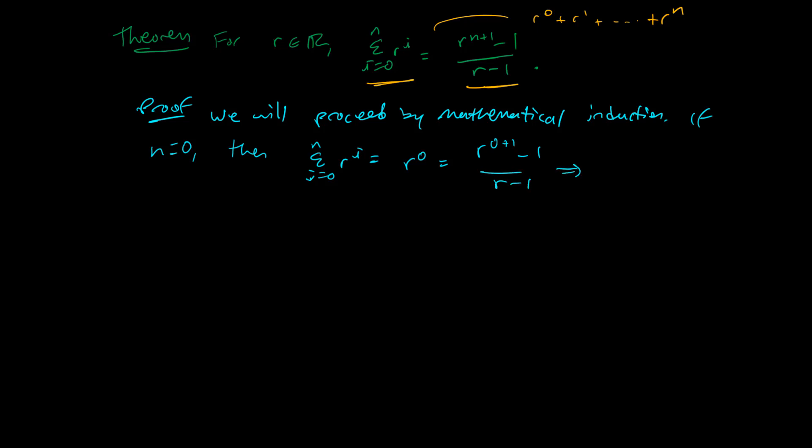And hopefully that is the same thing as r to the 0 plus 1 minus 1 over r minus 1. And notice that r to the 0 is 1. On the right-hand side of the equation, we get r minus 1 over r minus 1, which is 1 as well. The theorem holds for n equals 0.